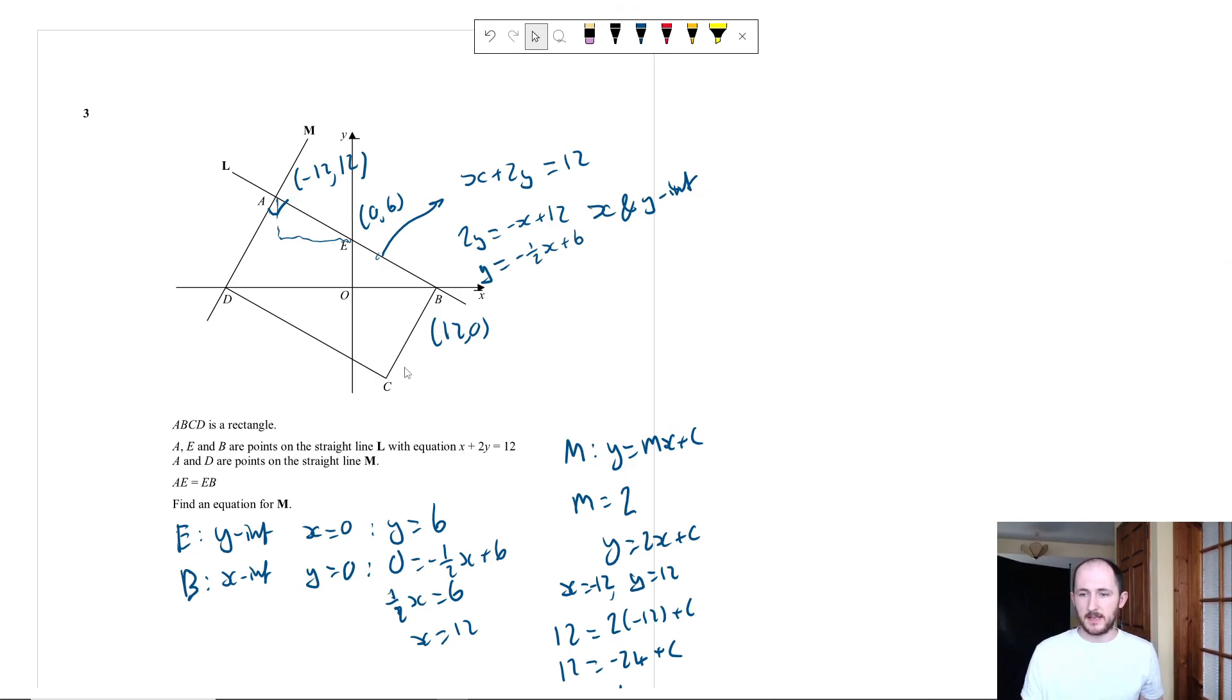And then from there, we can just kind of figure out what we can. Again, with this part here, AE is equal to EB. Again, we use that in order to work out the coordinates of A. So I hope that makes a little bit more sense, and I hope you enjoyed and found it useful. Thank you.